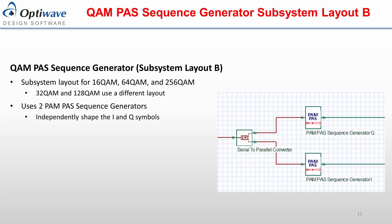Subsystem layout B of the QAM-pass sequence generator component uses two of the aforementioned PAM-pass sequence generators to form the output sequences for the 16 QAM, 64 QAM, and 256 QAM formats. The layouts for the 32 QAM and 128 QAM formats differ but operate in a very similar manner, and can be found in the documentation for the component and the files provided in the OptiSystem example library.